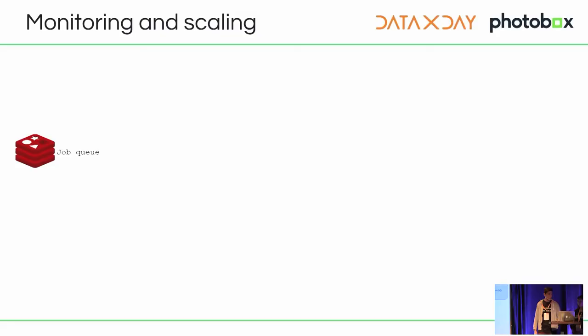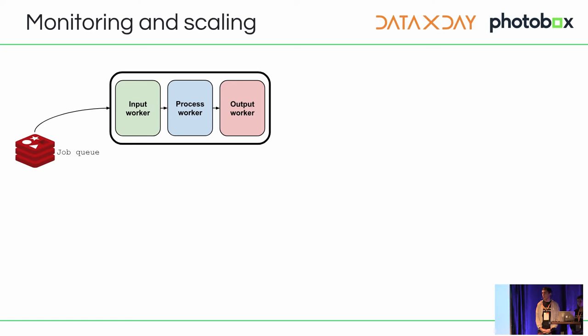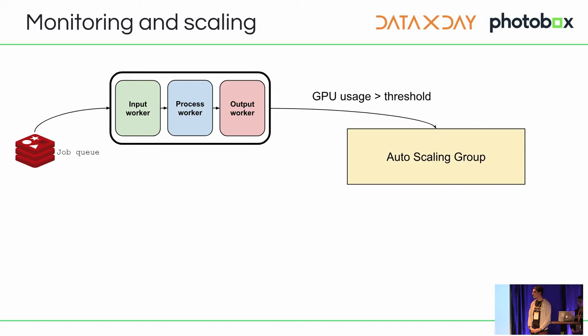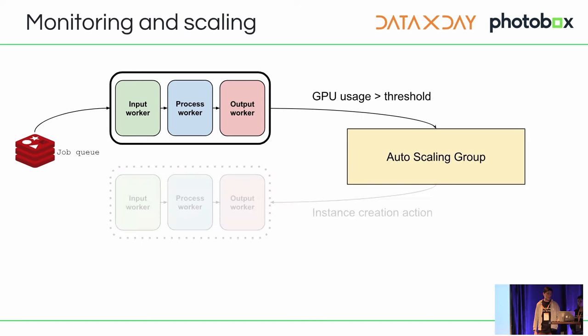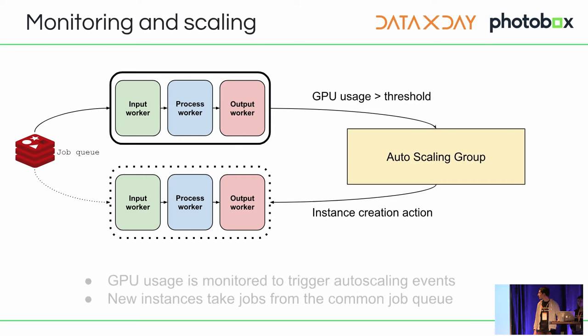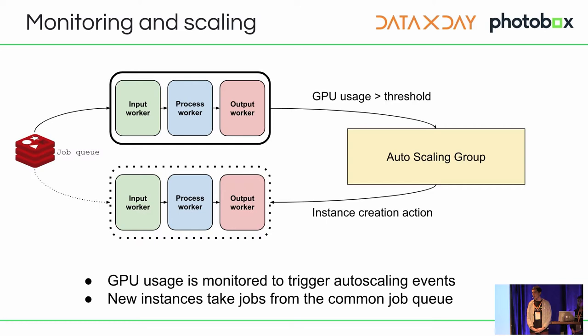So far we've seen a single instance example. For scaling, from the common job queue we have our single instance, and if the GPU usage goes beyond a threshold, an auto-scaling rule creates a new instance that feeds from the same job queue. We just need custom GPU monitoring to know when the system is overloaded.